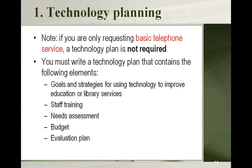There are five basic elements that the SLD requires in a technology plan. This is something you may already be doing for other purposes, and it's always a good idea to have one anyway. The five elements are: goals and strategies for using technology in your library — basically why do you have it and what is it good for your patrons; keeping staff trained on the technology; doing regular needs assessments of what you've got and what you need; having a budget to keep up with technology as it changes; and an evaluation process for going back and reviewing these plans.